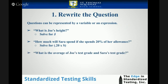'What is the average of Joe's test grade and Sarah's test grade together?' This is a question that can be represented by an expression with more than one variable: (J + S) divided by 2, where J represents Joe's test grade and S represents Sarah's test grade.